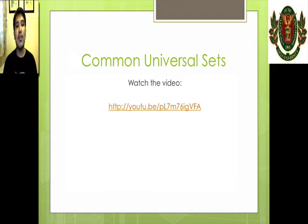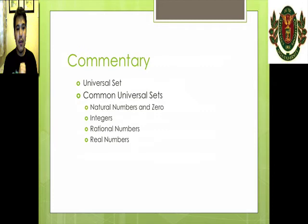Okay, assuming that you paused and you watched the video, here is my commentary. He talked about universal sets, what a universal set is. He also enumerated the common universal sets, the natural numbers. And he talked about zero. So in some references, zero is not considered as a natural number. In computer science, most books consider zero as a natural number because it's used also for counting. So if you can't count anything, that's zero. He also talked about integers, rational numbers, and real numbers. Please note the symbols that are used to represent these universal sets.